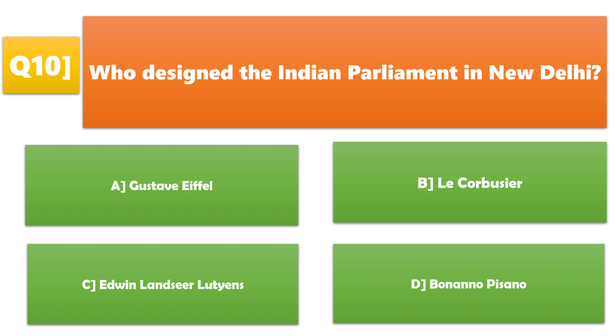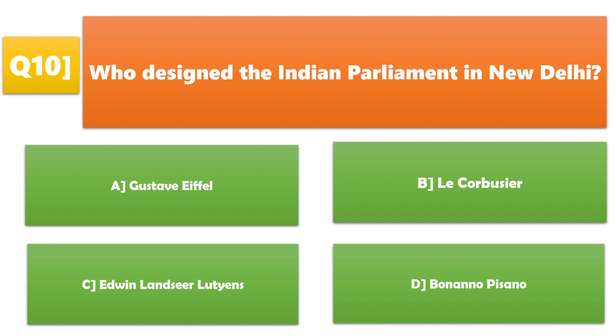Who designed the Indian Parliament in New Delhi? A. Gustav Eiffel, B. Le Corbusier, C. Edwin Landseer Lutyens, D. Bonanno. C. Edwin Landseer Lutyens is the correct answer.